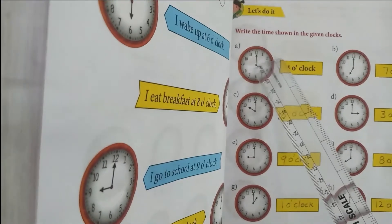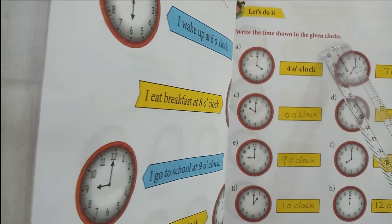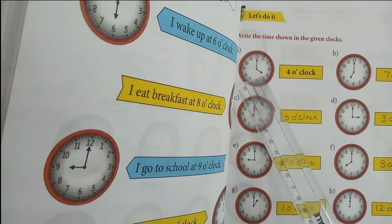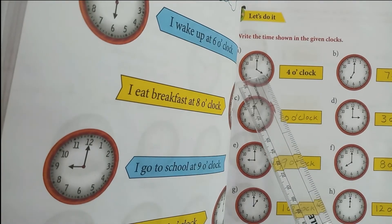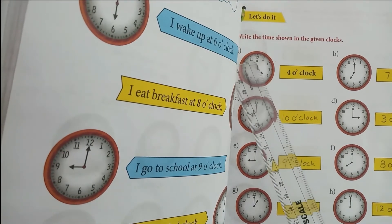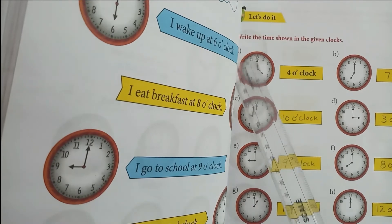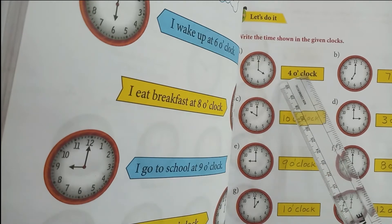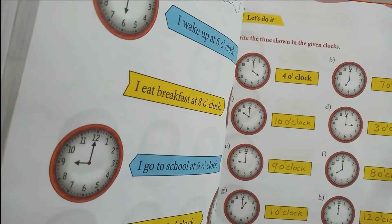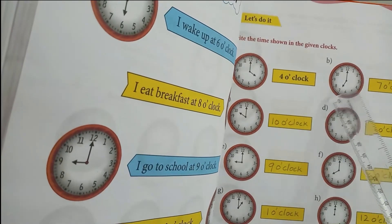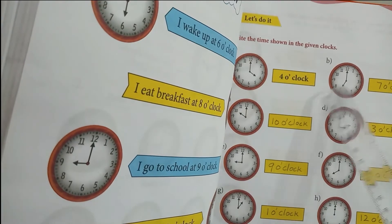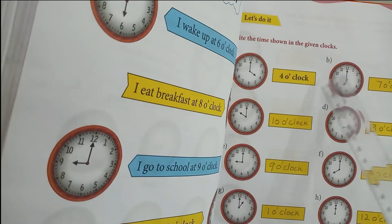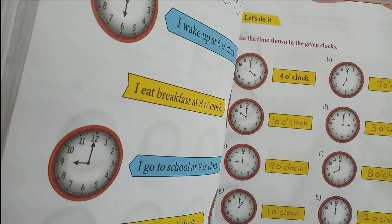Now let us do it. Write the time shown in the given clocks. For example, here the short hand is pointing towards 4 and the long hand is pointing towards 12, so this time is 4 o'clock. Now B: the short hand is pointing at 7 and the long hand is pointing at 12, so we read this as 7 o'clock.